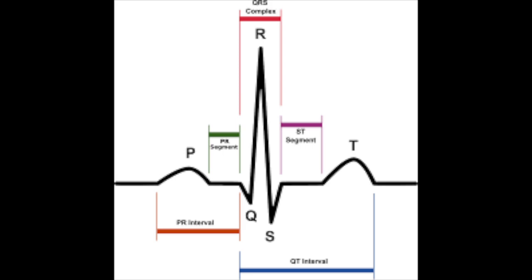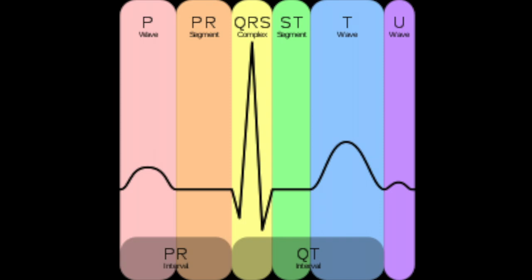The QRS complex consists of three waves and represents ventricular depolarization. The rule for reading this complex is that if the wave immediately after the P-wave is an upward deflection, it is an R-wave. If it is a downward deflection, it is a Q-wave. Small Q-waves correspond to depolarization of the interventricular septum, and they can also correlate with breathing and usually are thin. The R-wave reflects depolarization of the main mass of the ventricles, which is why it is the largest wave in this complex. The final wave, which is the S-wave, signifies the final depolarization of the ventricles at the base of the heart.